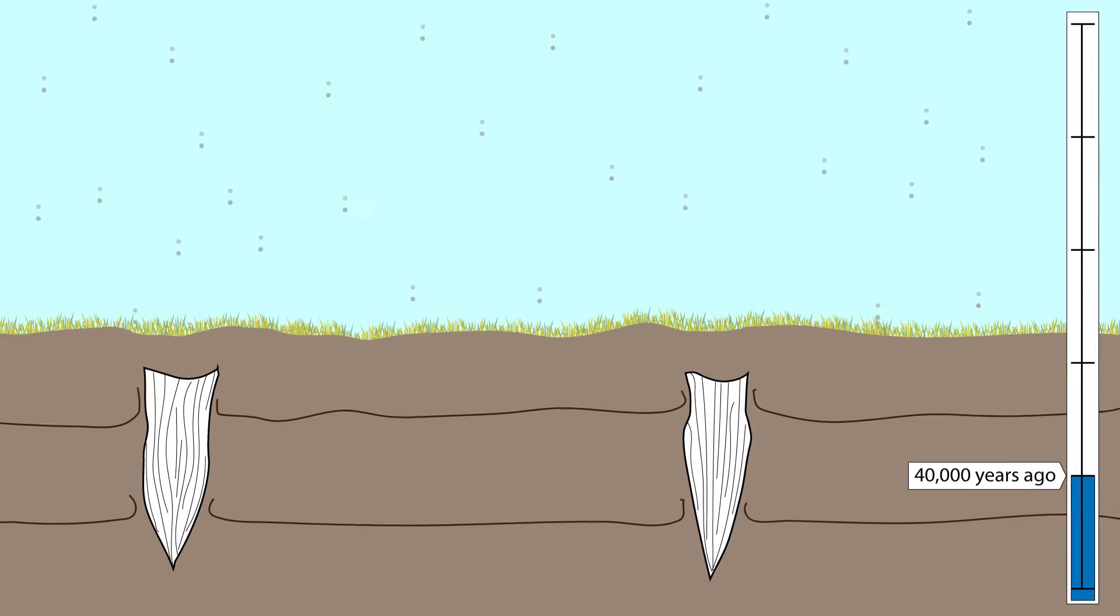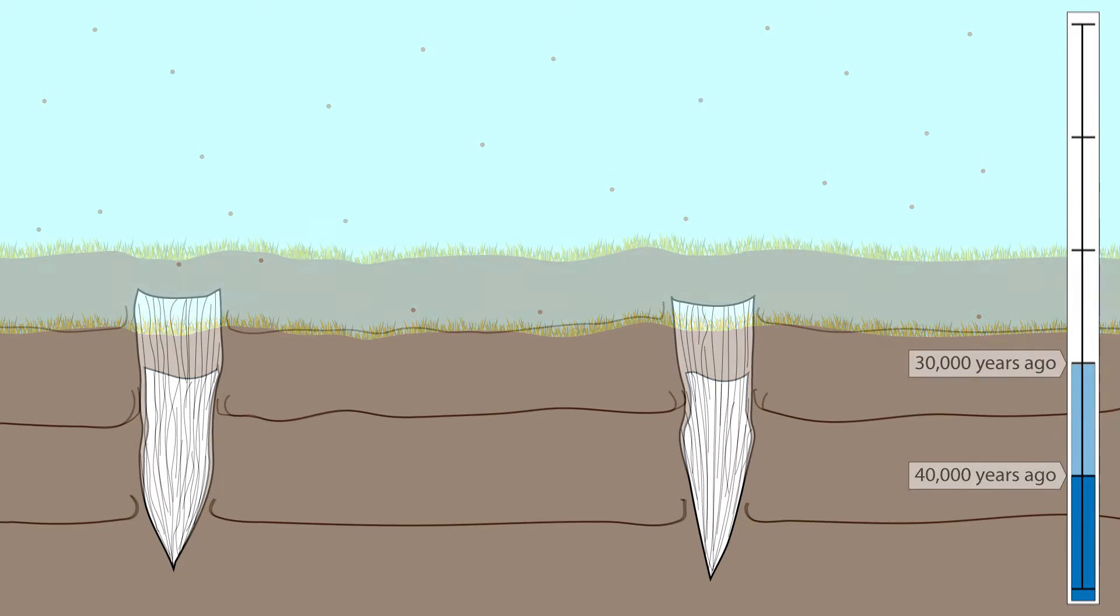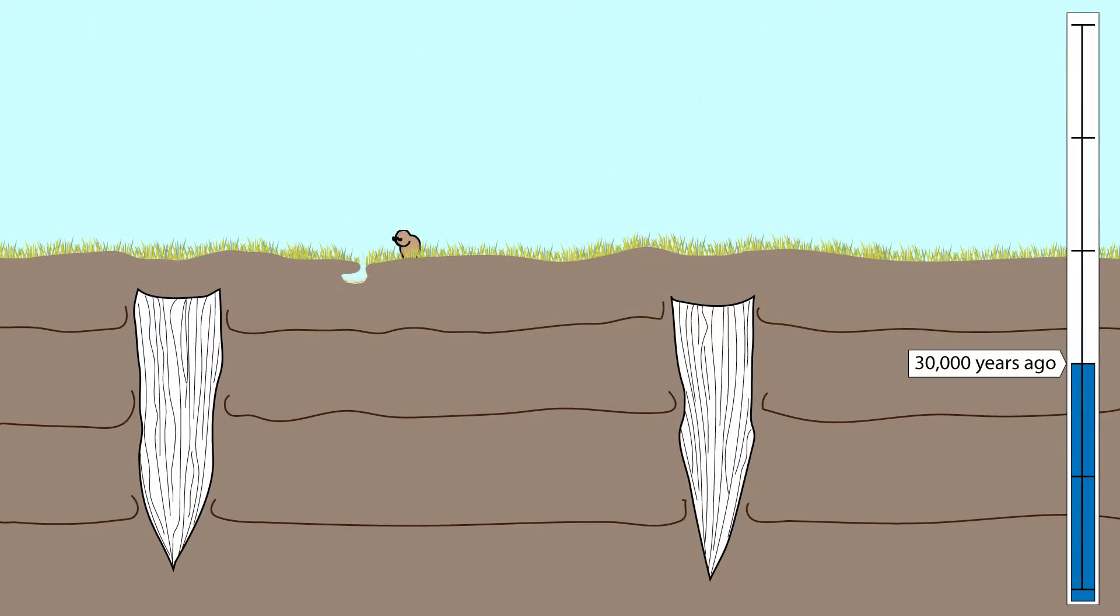Vegetation remains such as plant pieces, seeds, and pollen were buried and frozen in time inside the permafrost. Evidence of animals were also preserved, such as ground squirrel nests.